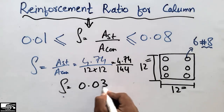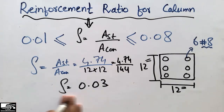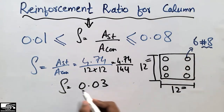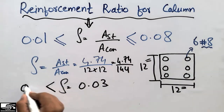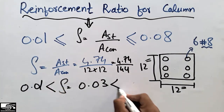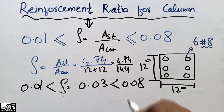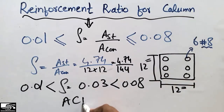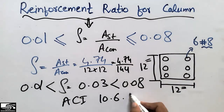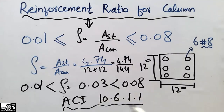After calculation, the reinforcement ratio comes out to be 0.03. This is greater than 0.01 and less than 0.08, so this column satisfies ACI code 10.6.1.1 — the recommendation of the American Concrete Institute. This is a well-designed column and we can proceed to use it in practical applications.